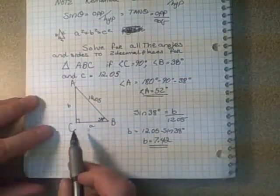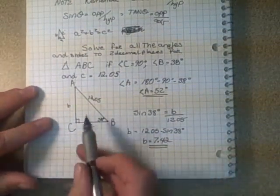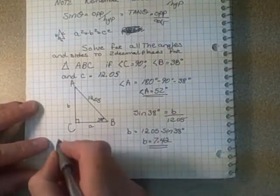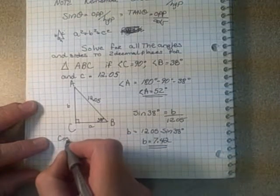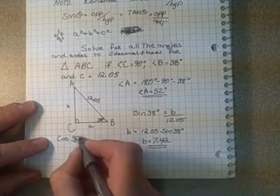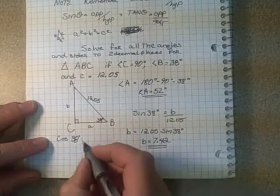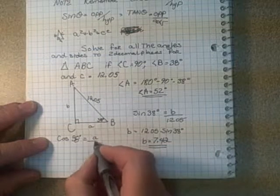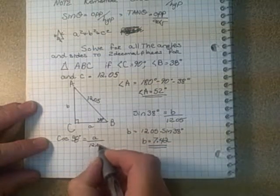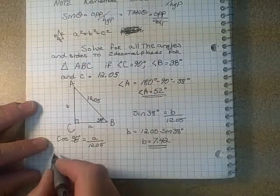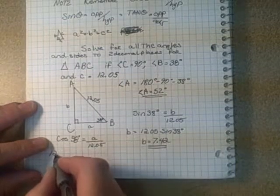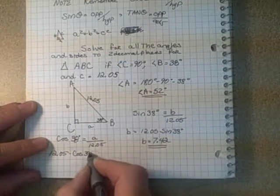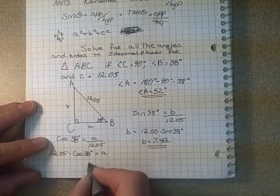Similarly, I can do a similar thing to find out what A is. I could do Pythagorean theorem now if I wanted, but I think it'll be quicker if I just take the cosine of 38 degrees. Notice I'm using the one that was given to me in the question. Is equal to adjacent, which is A, over hypotenuse, which is 12.05.